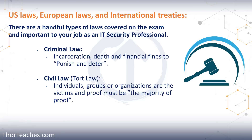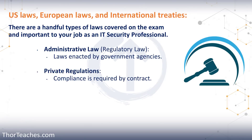As the next type of laws, we have administrative or regulatory laws. They're made by government agencies — in the US that could be the FDA or FAA, something like that. An example of this could be HIPAA, which we just talked about — the one that in the US protects the individual's medical records and their protected health information.